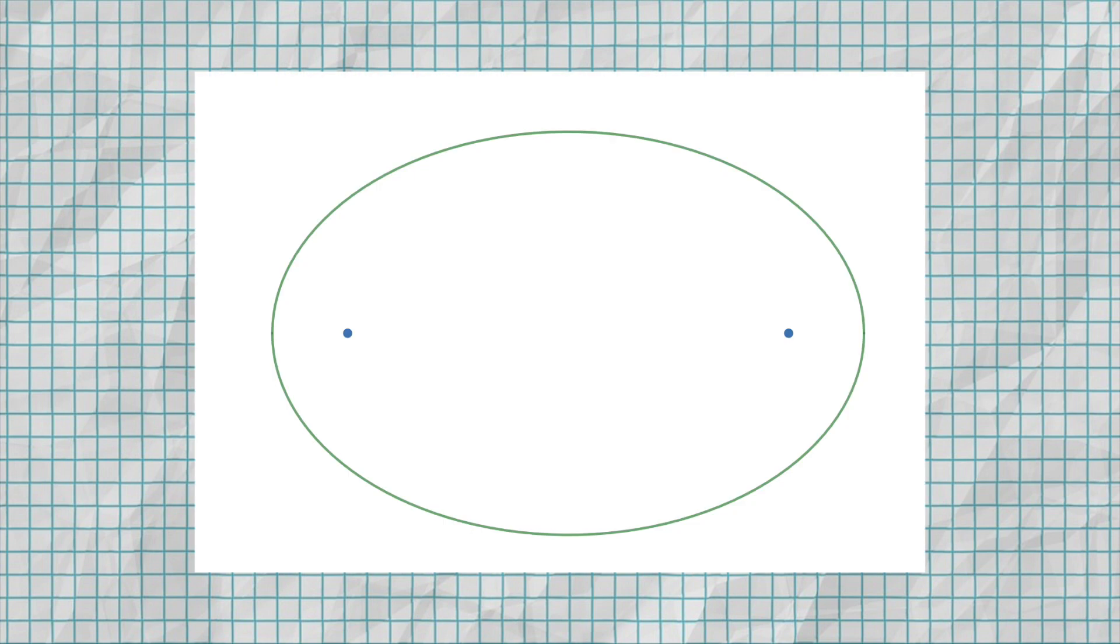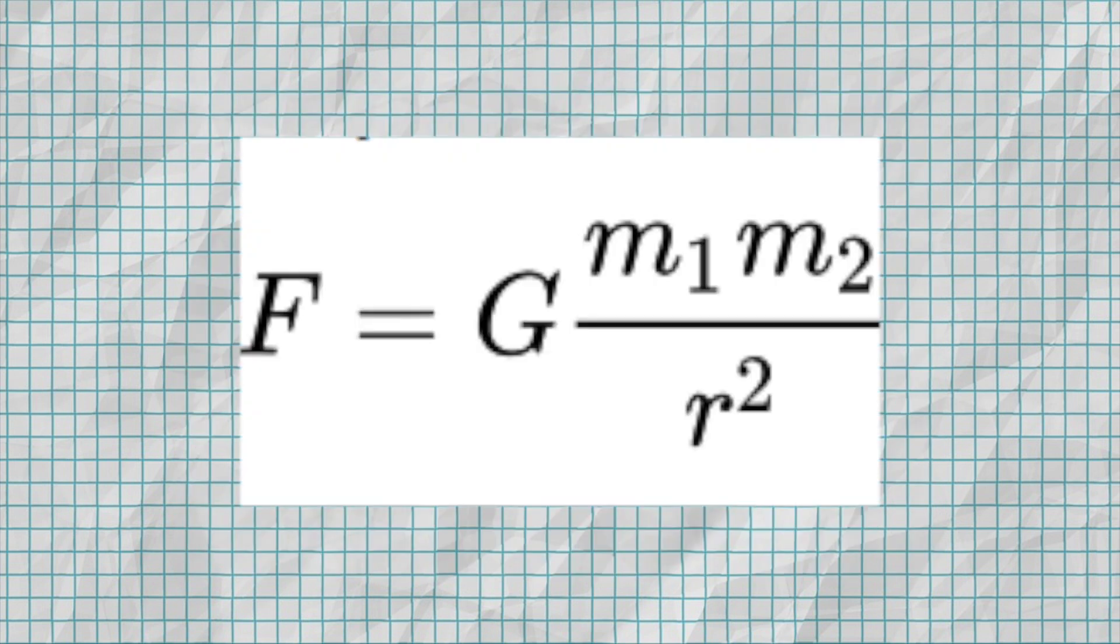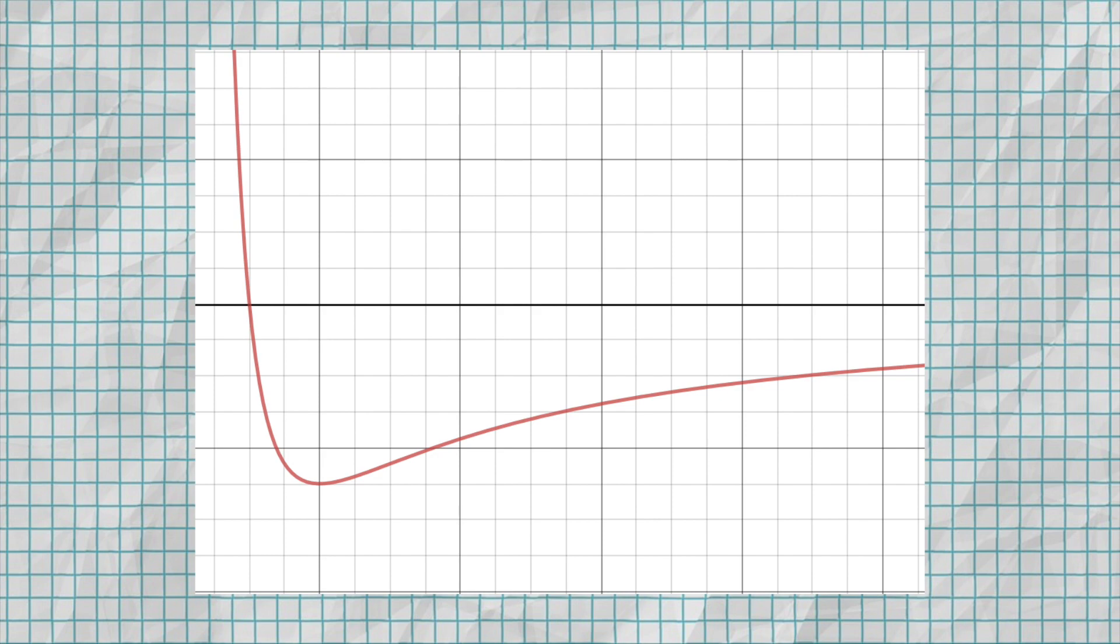Today, we're going to prove that ellipses actually do make the most sense for orbital shapes. Normally, we'd write out Newton's laws of motion, plug in the gravitational force, and solve for some new orbital equation, but we can avoid a lot of that math through a simple graph.